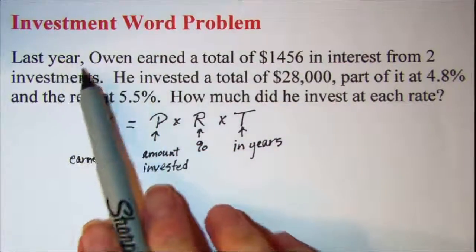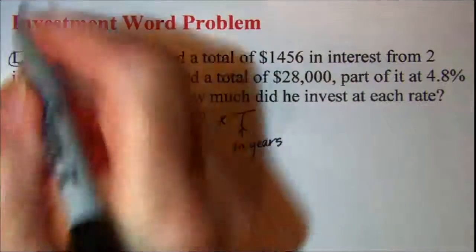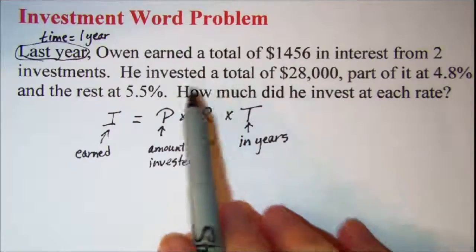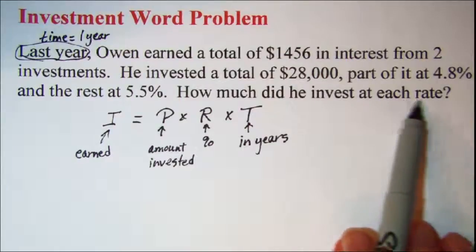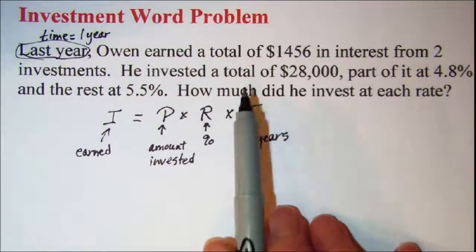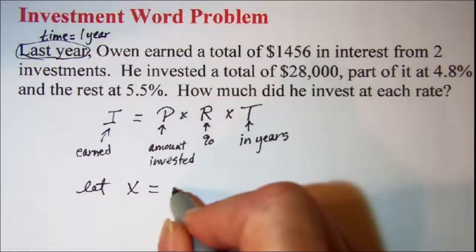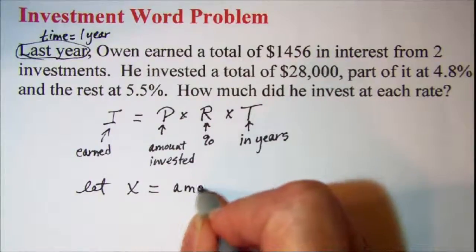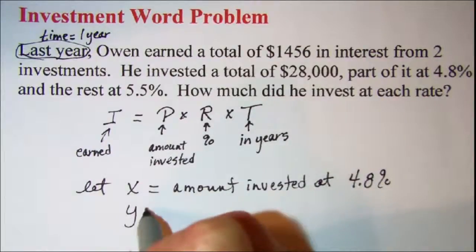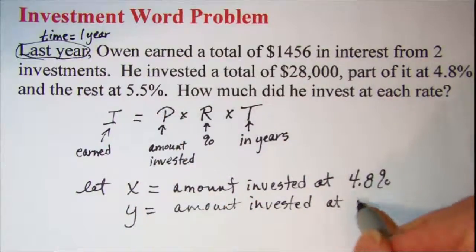So if we read through our problem we start out saying last year. That means that the time is one year. And our question is how much did he invest at each rate? So we'll need to use variables for each of those investments. Let's let x equal the amount invested at 4.8% and we'll let y be the amount invested at 5.5%.